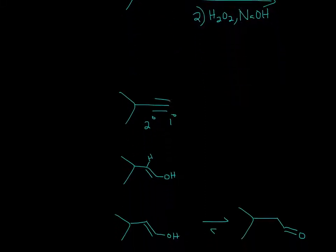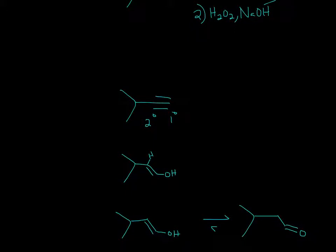So the alcohol will go on the primary, it'll go on the less substituted one. So it'll form an alkene, and after the substitution, or the syn addition, you'll have the hydrogen right here on the secondary and the alcohol on the primary.